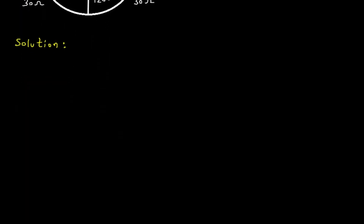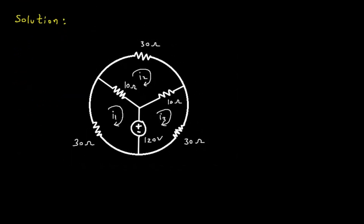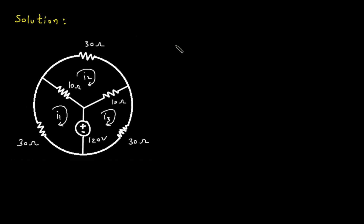Solution: first we will redraw the circuit. Now we will apply KVL to each mesh. Before that, we will assign the signs.